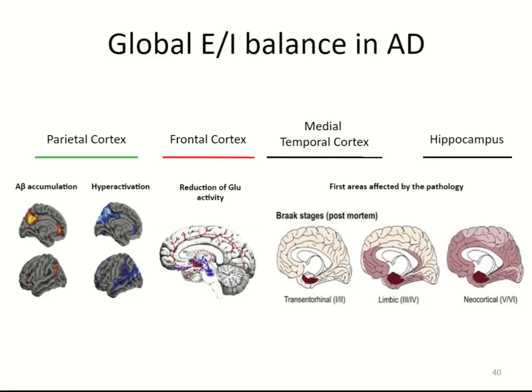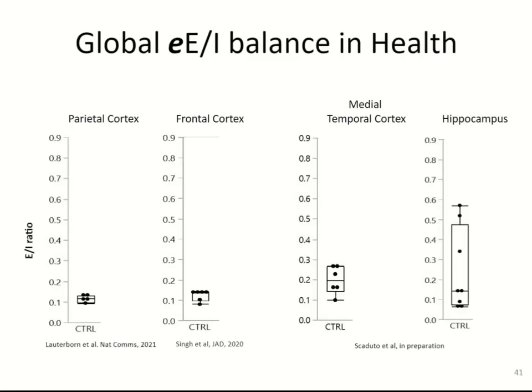We also studied other brain regions: the frontal cortex, where there is hypoactivity in functional MRI studies, and the temporal cortex and hippocampus, which have been studied extensively. Looking at global EI ratio in health across brain regions, controls show very narrow variation in every region, though there are some differences depending on the region. Parietal and frontal cortex are very similar, but the medial temporal cortex shows an increase in EI ratio. Hippocampus is highly variable, suggesting complex sampling of this region due to its heterogeneity.